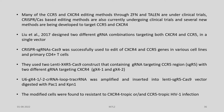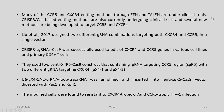We now know that many CCR5 and CXCR4 editing methods through ZFN and TALEN are under clinical trials. In the case of CRISPR-Cas9, Liu et al. in 2017 designed two different guide RNA combinations targeting both CXCR4 and CCR5 in a single vector. The CRISPR sgRNA-Cas9 was successfully used to edit CXCR4 and CCR5 genes in various cell lines and primary CD4+ T cells, using two LentiX4R5-Cas9 constructs containing guide RNAs targeting the CCR5 region and two different guide RNAs targeting CXCR4: GX4-1 and GX4-2.